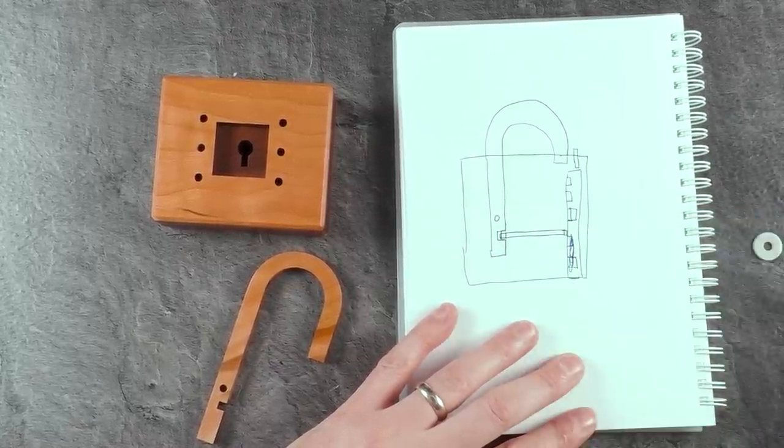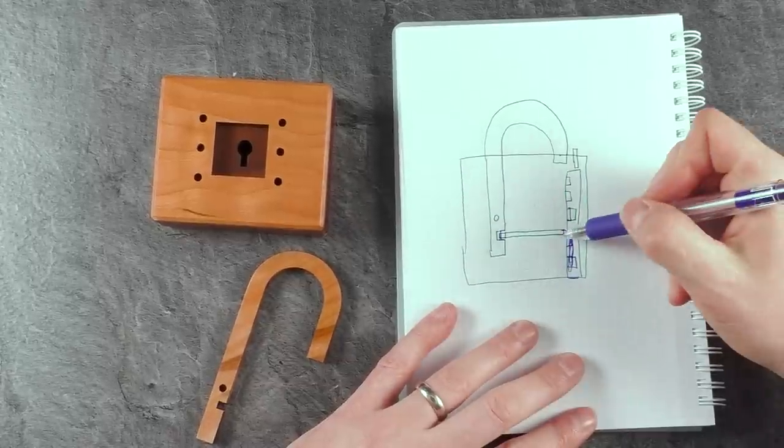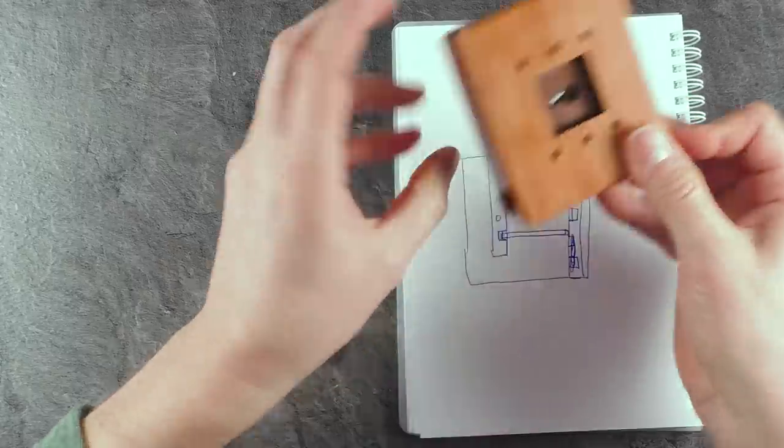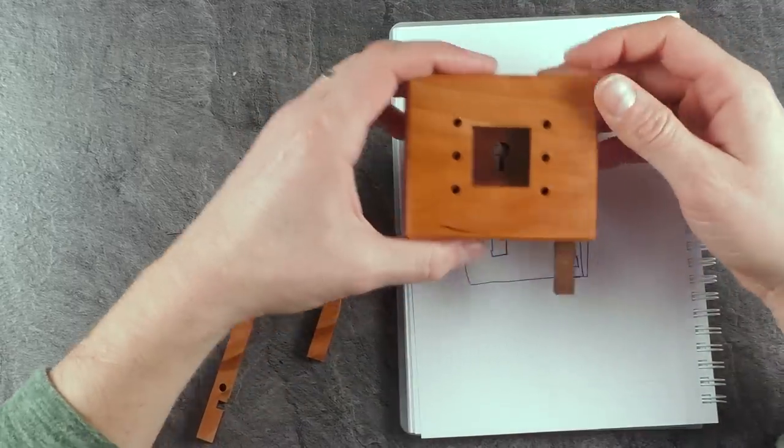So when I pull this now out and I pull it too far out, this pin will go inside one of these two holes here. This happens for example if I pull it out like so. Yeah. The pin is over here.